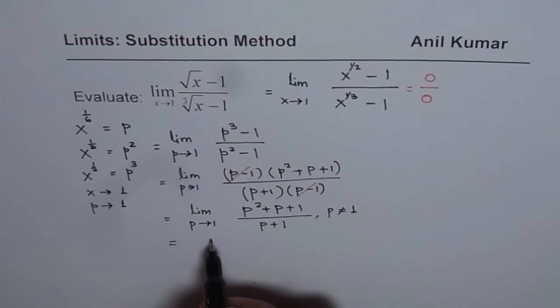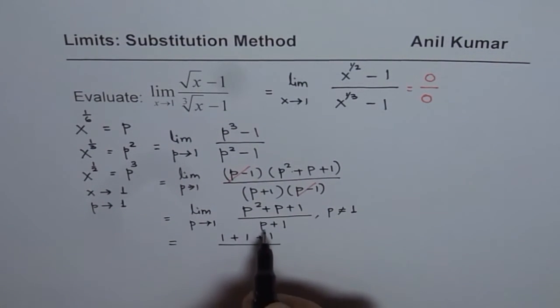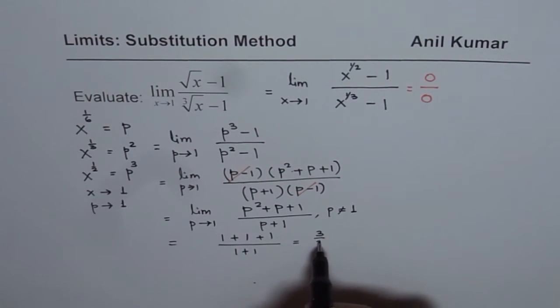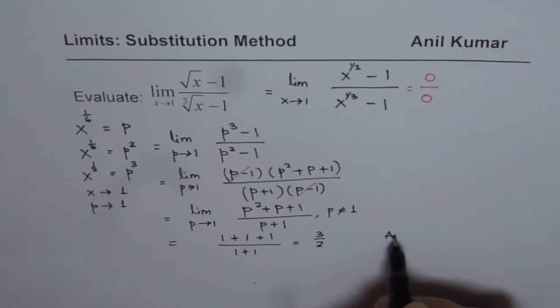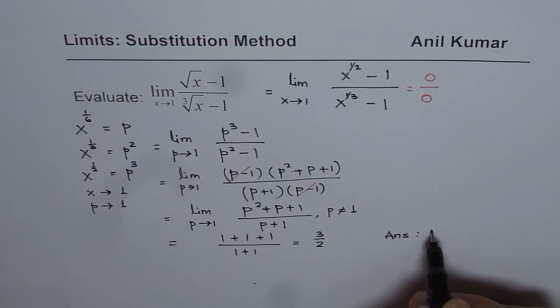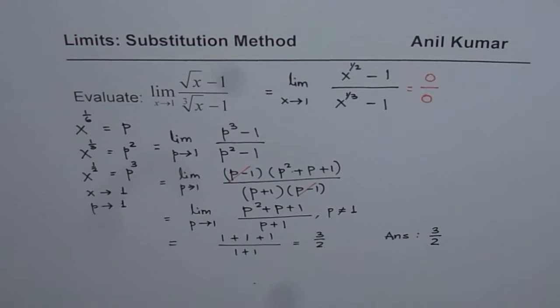We substitute 1 here. So we get 1 plus 1 plus 1 divided by p is 1, 1 plus 1. That gives us 3 over 2. And therefore, our answer for this question is 3 over 2. So that is how this question can be solved.